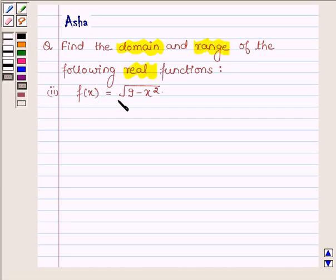f(x) is equal to square root of 9 minus x squared. Let us now start with the solution and here we are given a real function f(x) equals square root of 9 minus x squared.